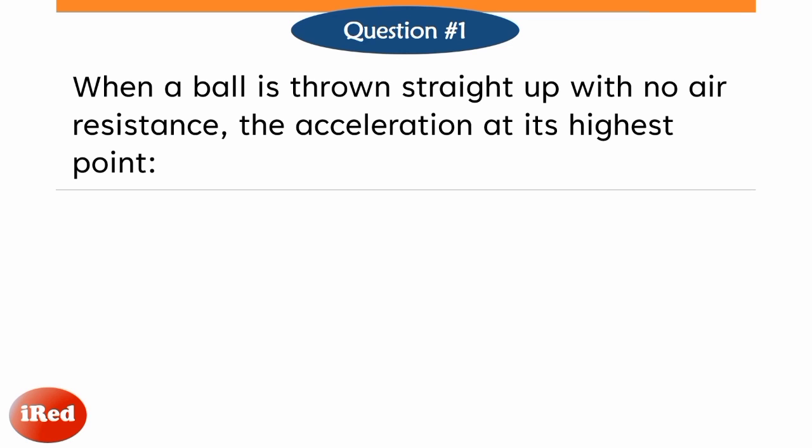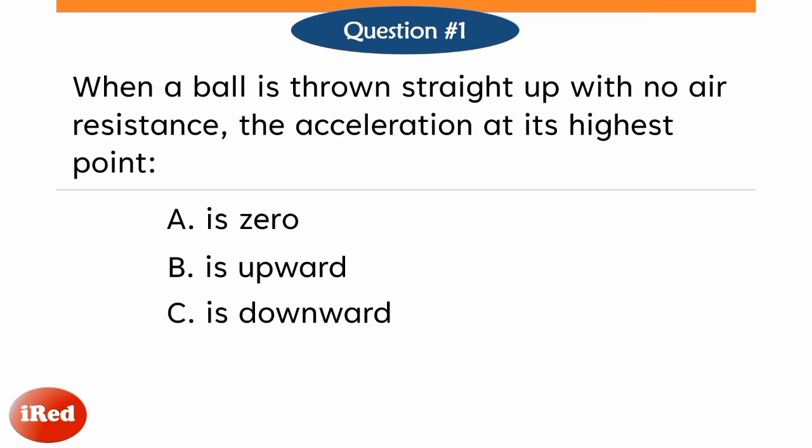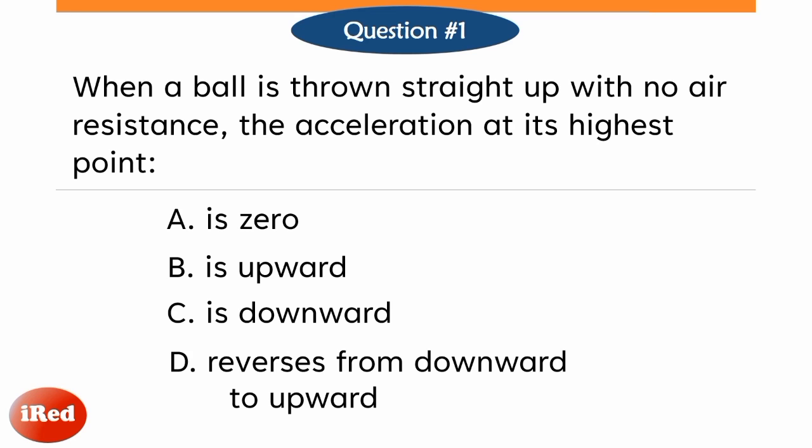When a ball is thrown straight up with no air resistance, the acceleration at its highest point: letter A is 0, letter B is upward, letter C is downward, or letter D reverses from downward to upward.